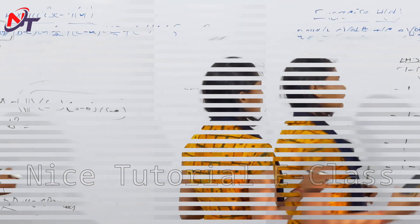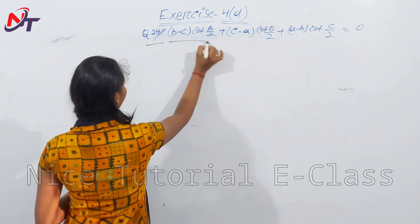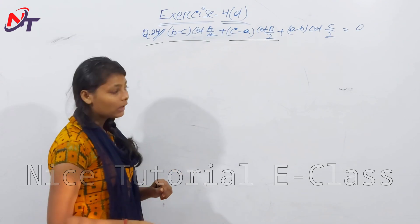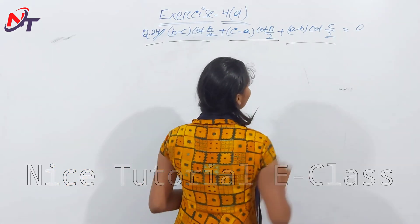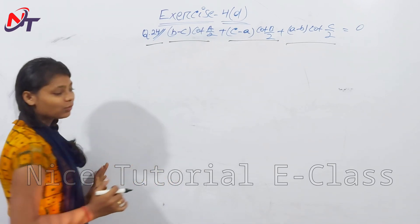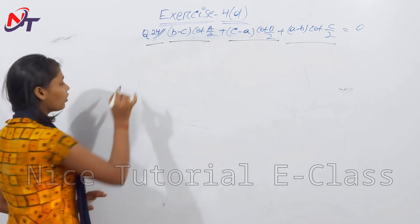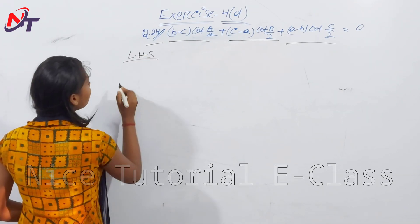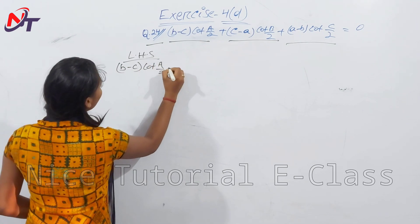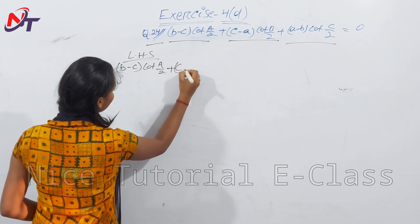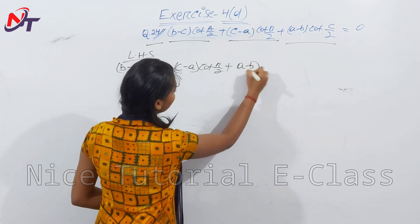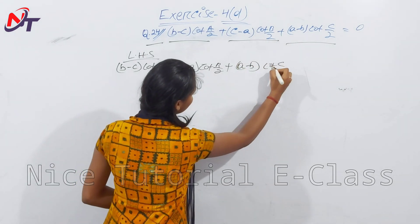Next question, number 24: prove that (b-c)cot(A/2) + (c-a)cot(B/2) + (a-b)cot(C/2) = 0. So LHS equals RHS. Left-hand side: (b-c)·cot(A/2) + (c-a)·cot(B/2) + (a-b)·cot(C/2).